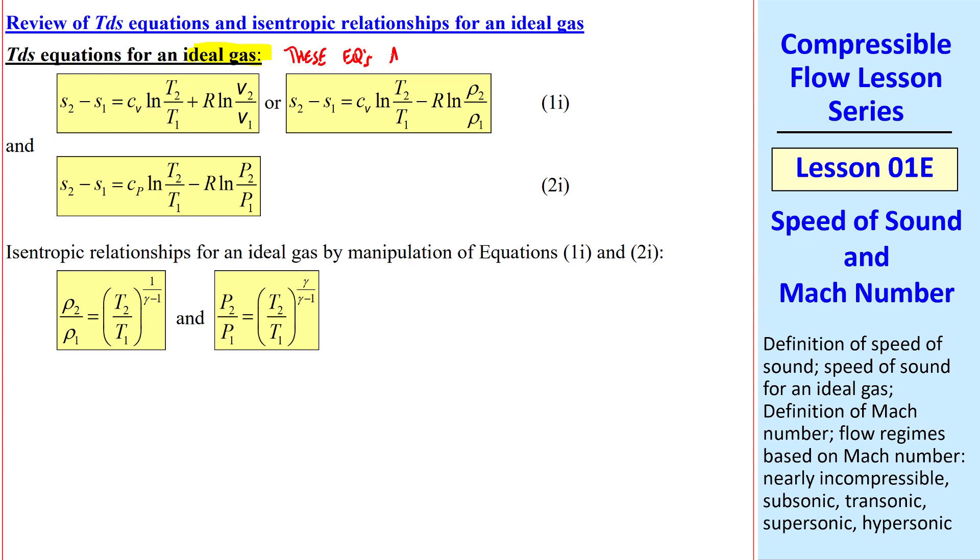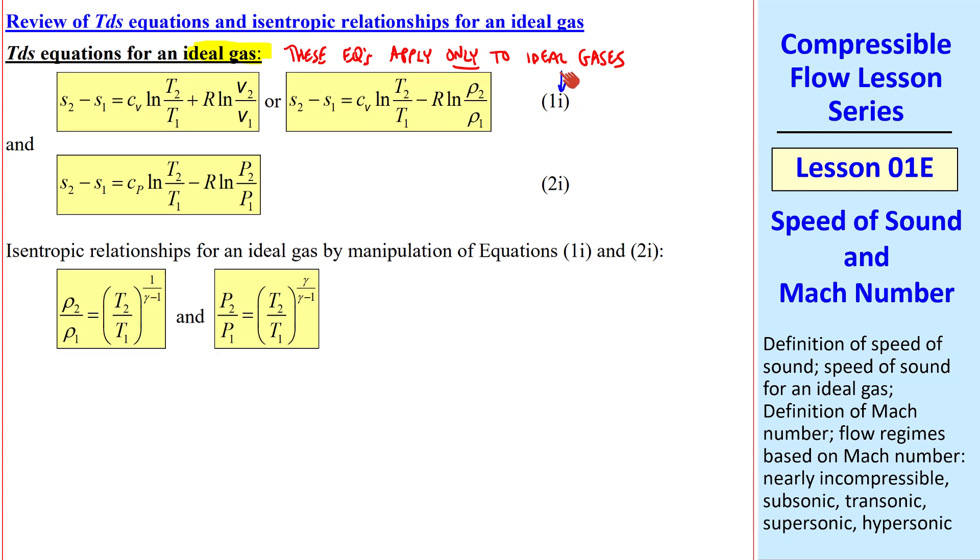These equations apply only to ideal gases. Here we have the first and second TDS equations, with an alternate version of the first one. And I use the I here to indicate that these are for ideal gases.